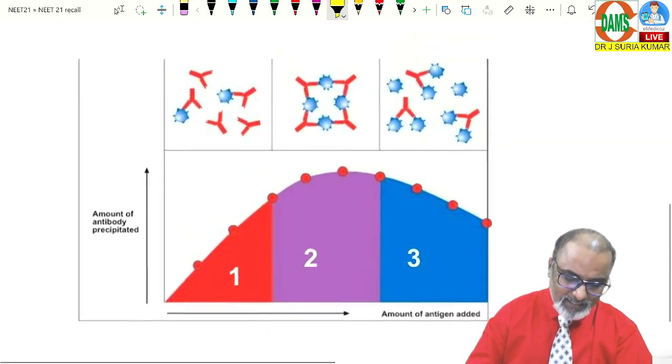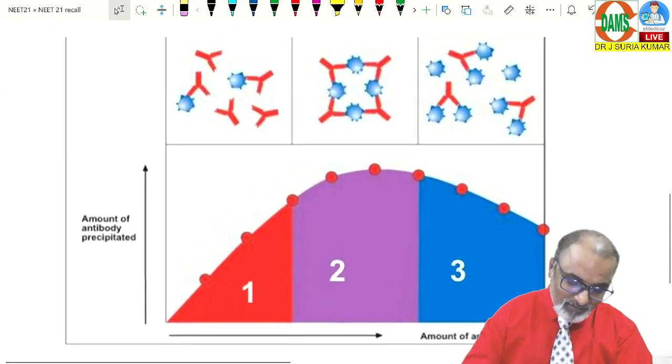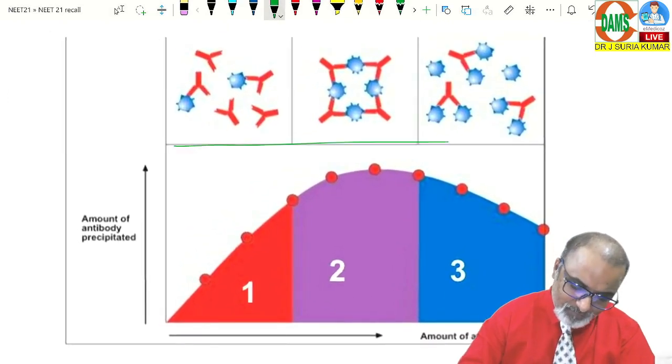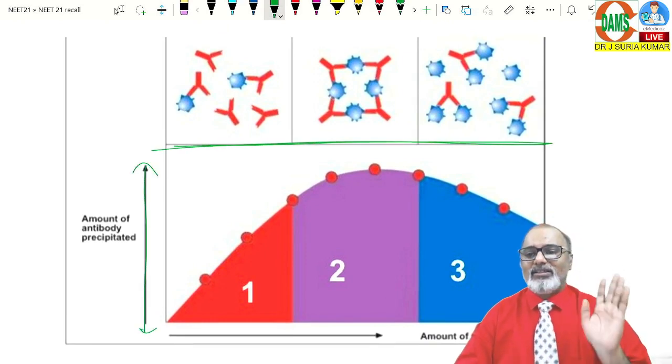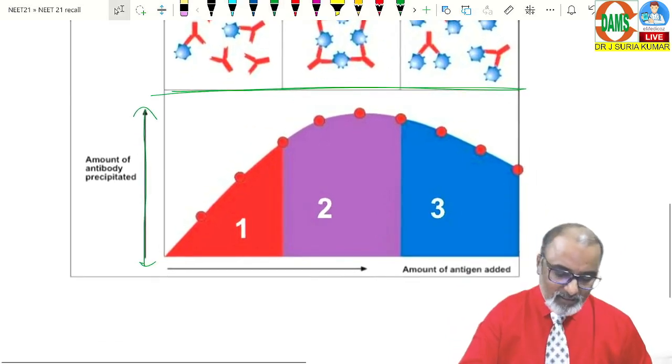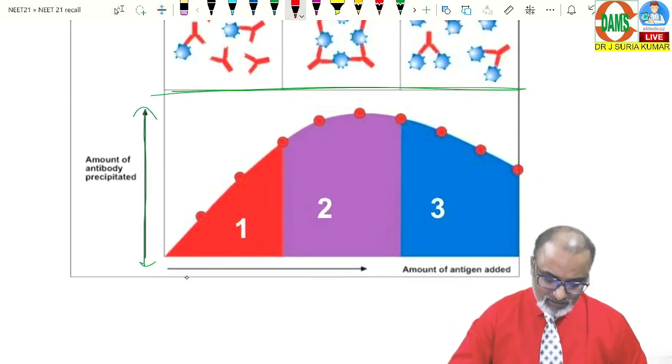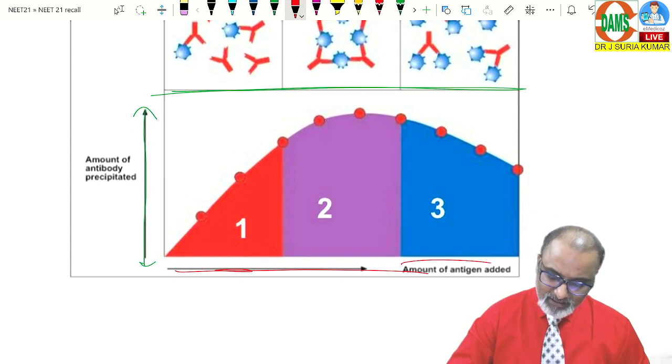There is a picture I show in the class regularly. People are aware of that. We have standard amount of antibody. Patient serum has antibody. When you add the antigen, increasing the antigen, say antigen amount is increased.